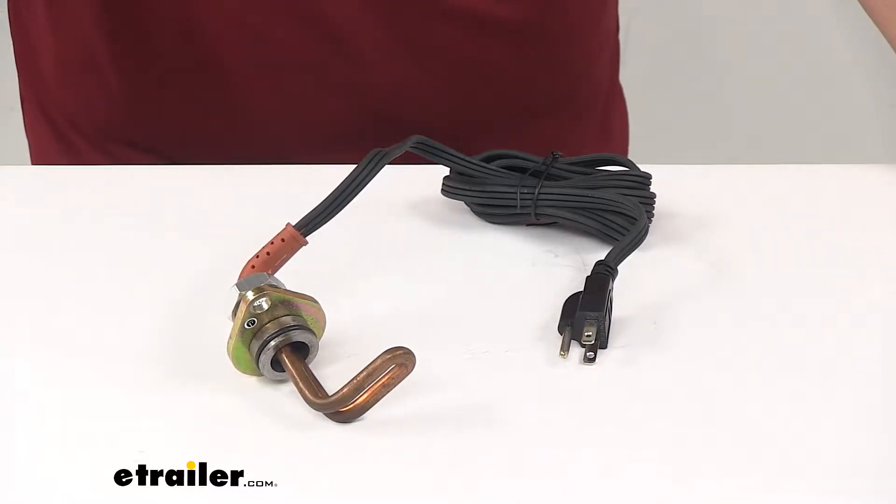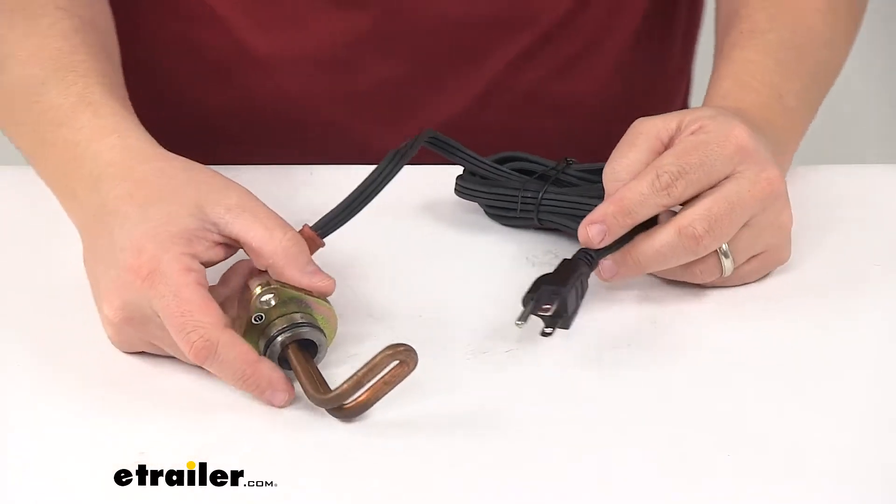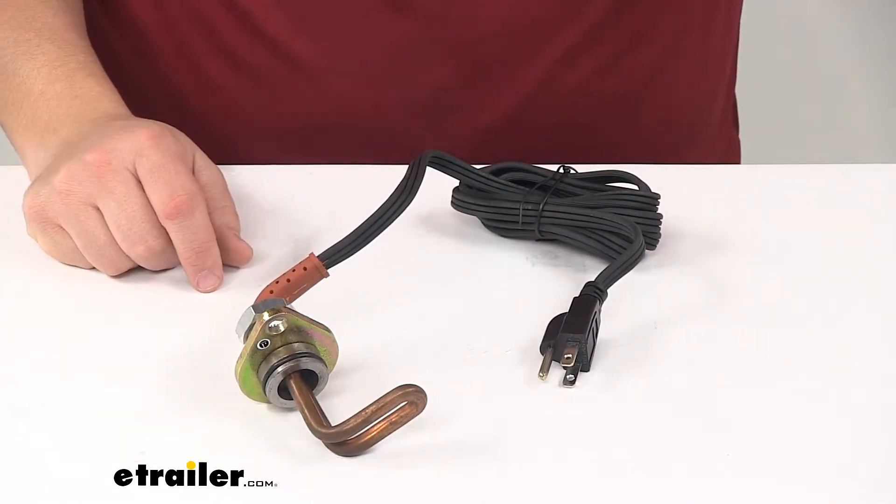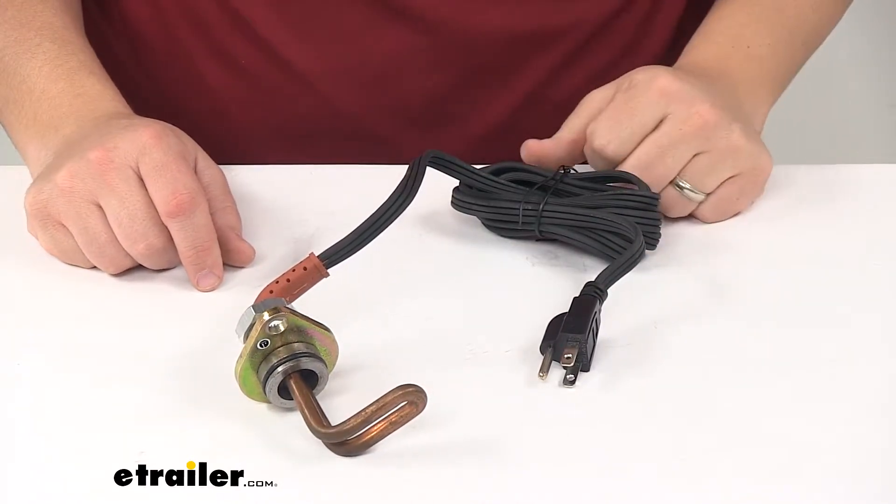Today we're taking a look at the CATS Heaters Custom Diesel Engine Block Heater. This unit ensures smoother startups and faster heating and defrosting of your cab. It replaces the rear inspection plate to engine block and submerges in coolant.